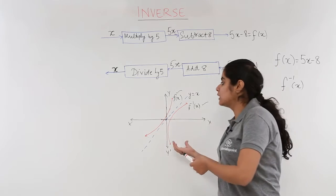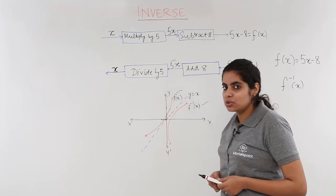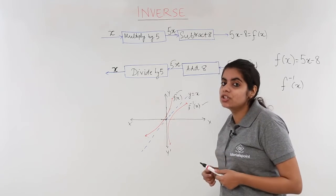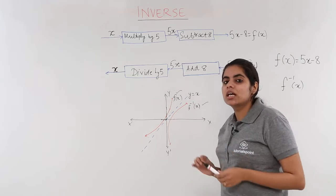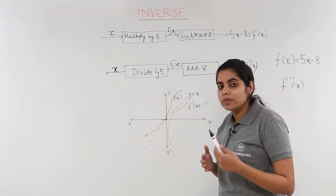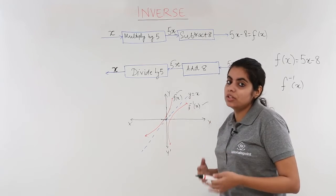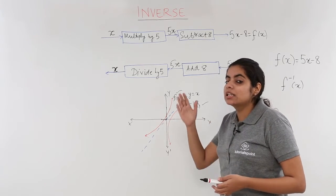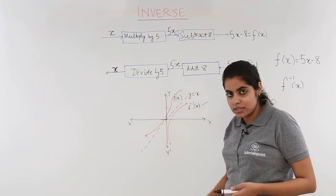Now by observing the graph or the diagram, you must have till now understood that these curves have a relation. That means f(x) and f inverse curve have a relation that these are the images or mirror images of each other. These are the curves which are reflected evenly about the line y = x.